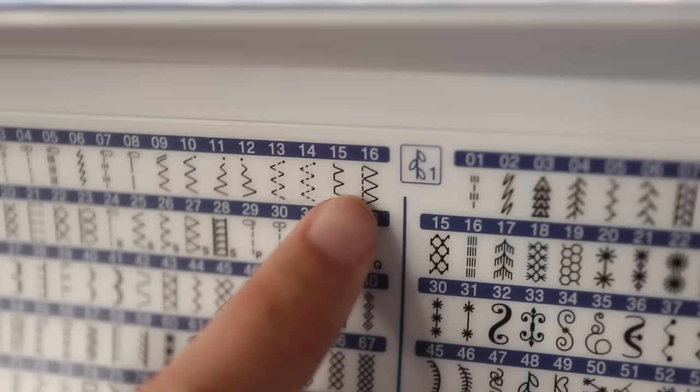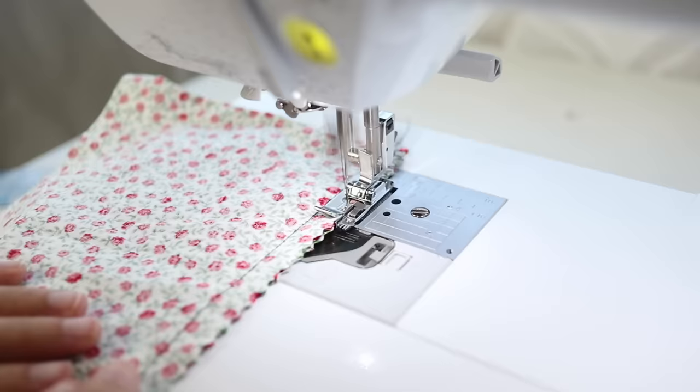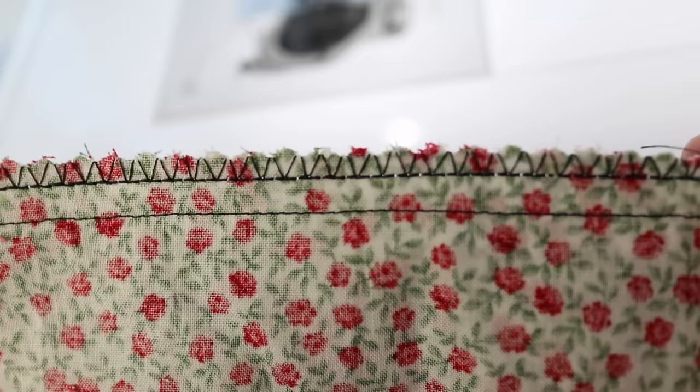Or you can use a zigzag or overlock stitch setting if you have it on your machine. Even some of the most inexpensive machines have this overlock stitch setting. The machine or your manual will tell you if you need to switch your presser foot to use this stitch.